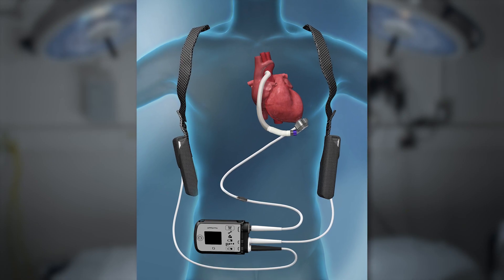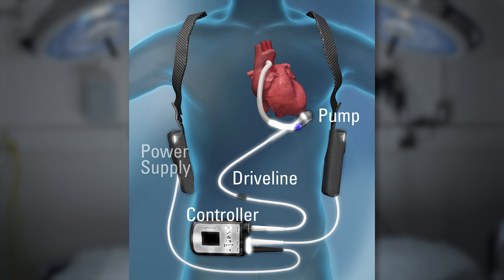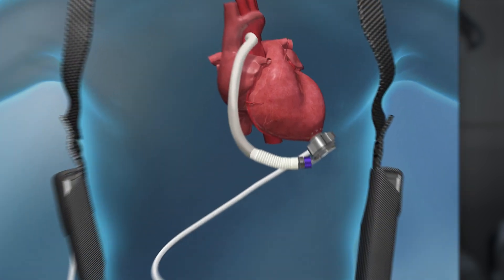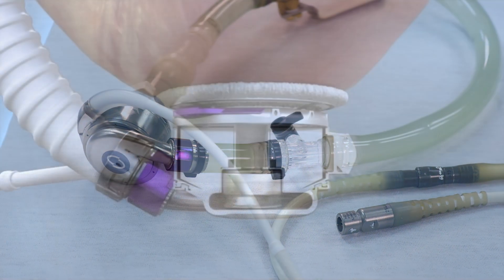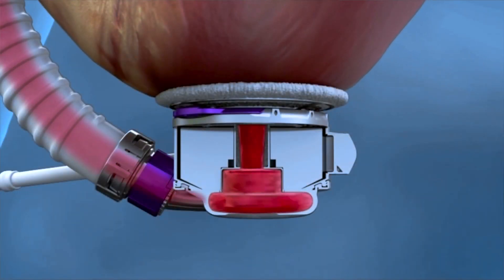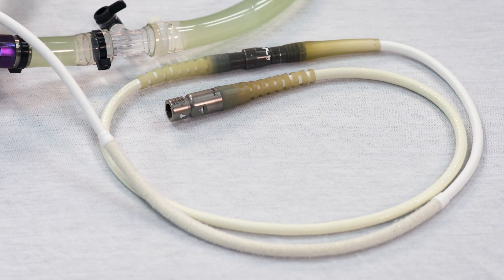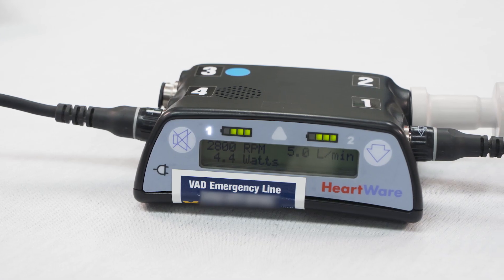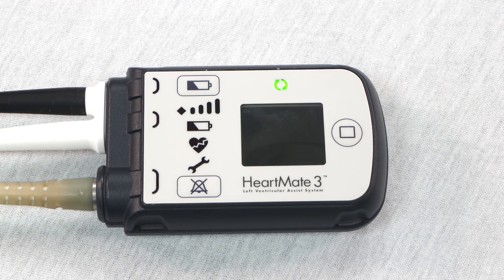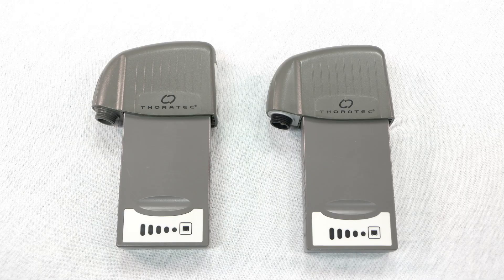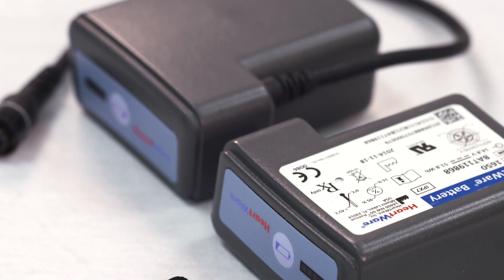There are four main components to a VAD system: the pump, the driveline, the controller, and the power supply. The pump provides normal cardiac output to a patient with severe heart failure — it does the work of pumping blood which the patient's heart can no longer do. The driveline is the connection from the pump to the external equipment. The controller is the brain of the system and monitors the device, allowing the patient and providers to assess the VAD status. The power supply is either from a battery pack or a wall outlet and provides power to the pump.